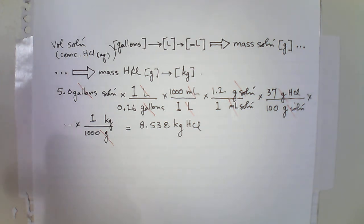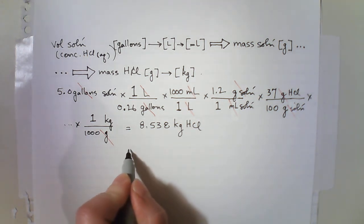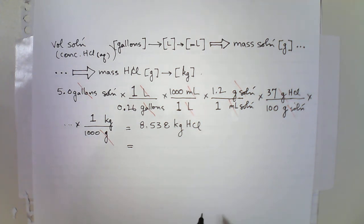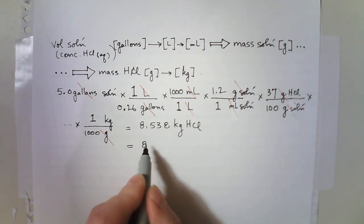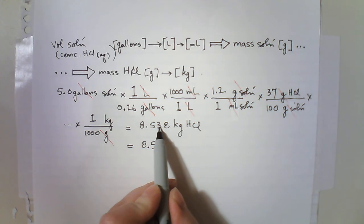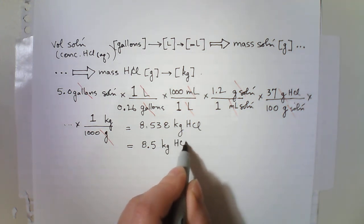Remember, this is in 5 gallons. And then I'll just tidy up the number of sig figs that I should have on it. And it should be 2, so it's just going to be 8.5 because that 3 is not high enough to push that to a 6. 8.5 kilograms of HCl.